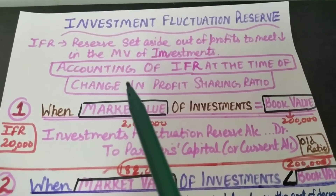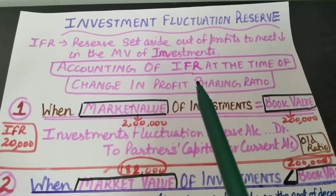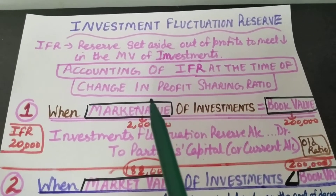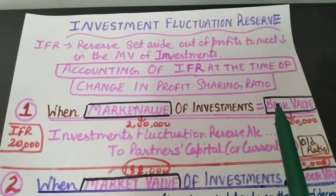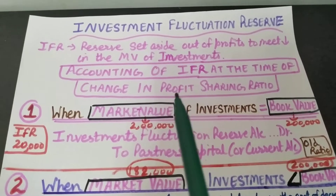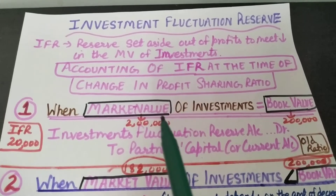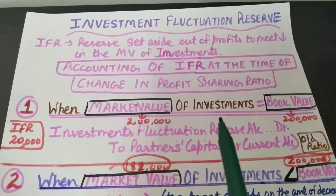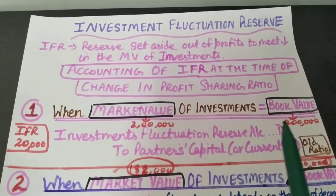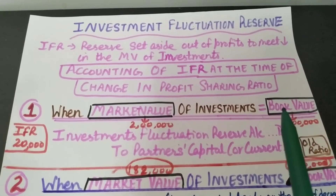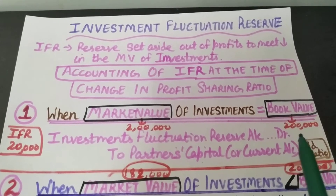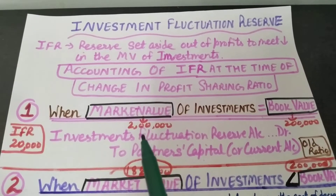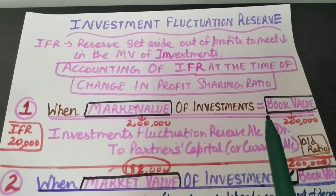Now we need to see the accounting treatment of Investment Fluctuation Reserve when partners change their Profit Sharing Ratio among themselves. Let us see all the situations one by one.